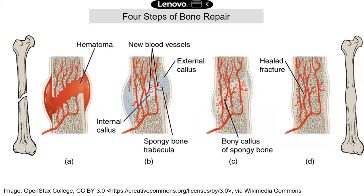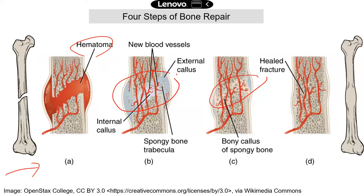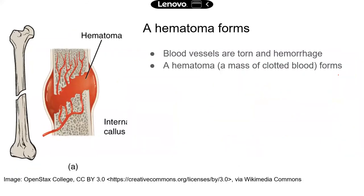There are four steps in bone repair, shown in the diagram here. The first step is the formation of the hematoma, then a fibrocartilaginous callus — a soft callus — will form. Next, this soft callus will be converted into a bony callus of spongy bone, and eventually the bone will be remodeled and the fracture will be healed. When a fracture happens, blood vessels going through the bone will be torn, the bone will hemorrhage, and a hematoma — a mass of clotted blood — will start to form.